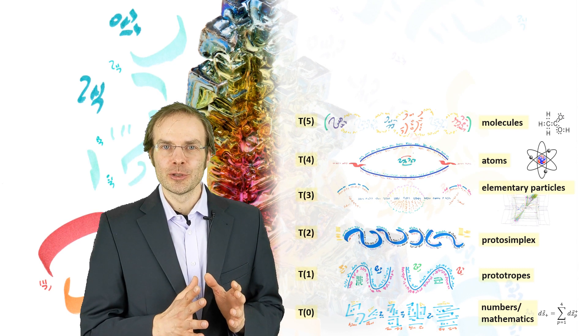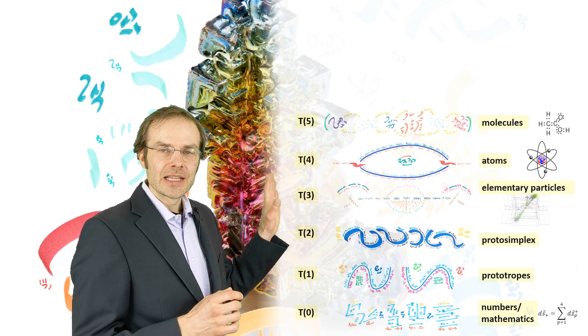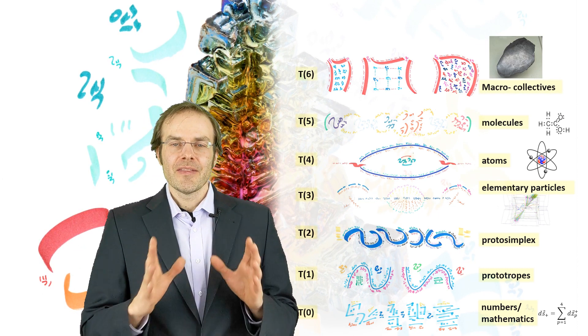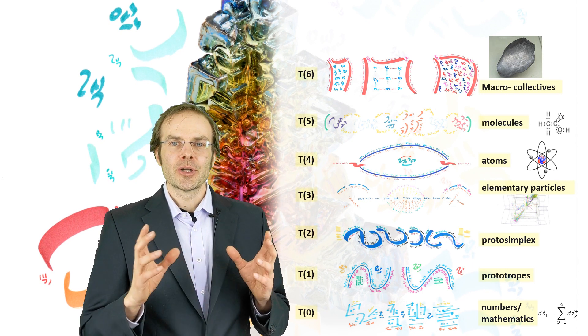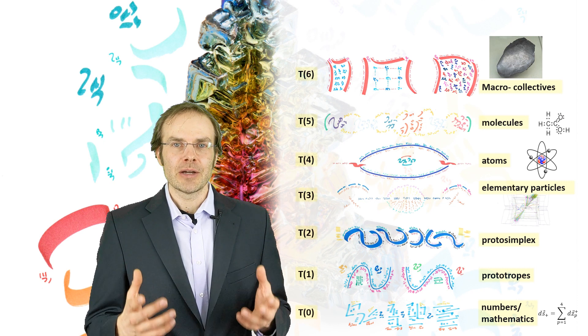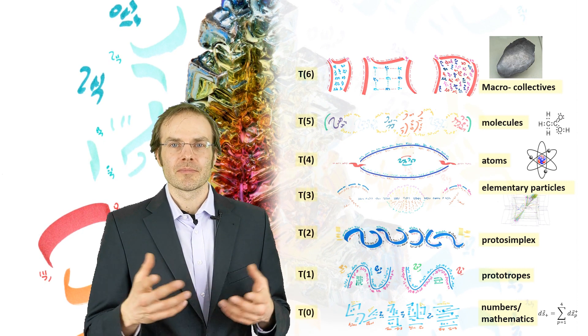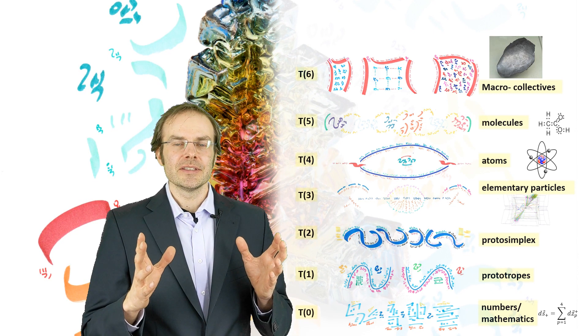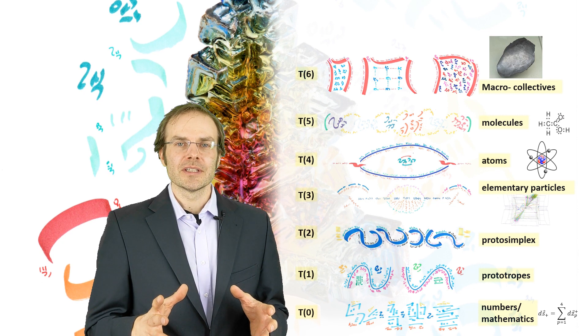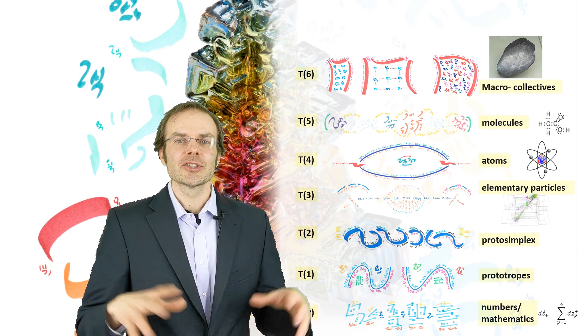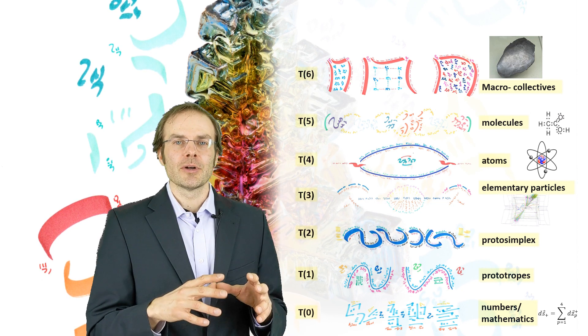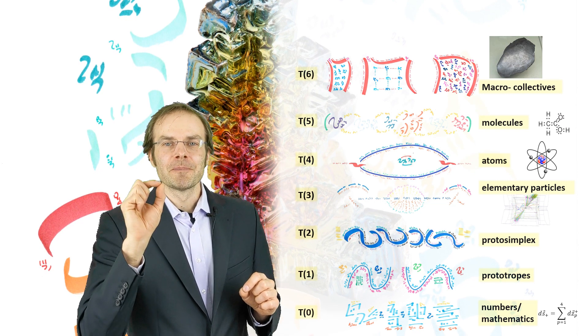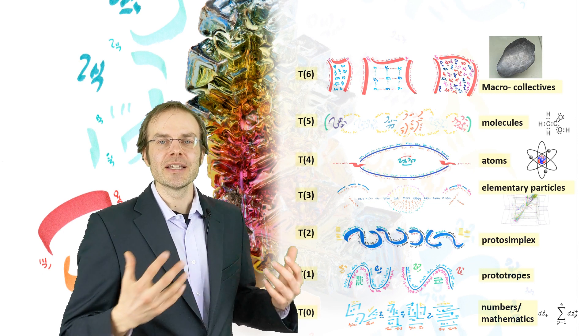Now we are almost at the end of the physical world already. We add another totality, number 6, called macro collectives. These are the macroscopic things that surround us—like rocks, air, a bunch of water—and the properties of these large assemblies of molecules or mixtures of molecules. These properties cannot be derived from the properties of one molecule; therefore, it's also another totality.